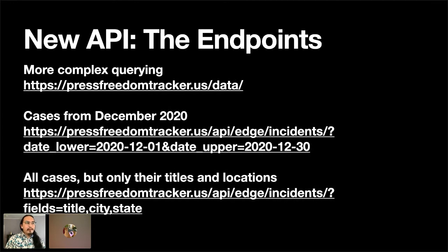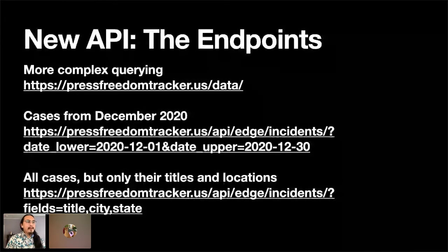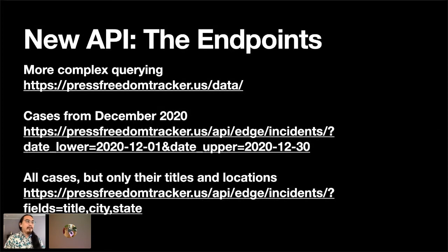Our API also supports more complex queries. We have some documentation for that at pressfreedomtracker.us. Here are a couple of examples: you can make a query with a date range to get incidents within a specific period. You can also change which fields you're requesting — by default it includes all information, which can be quite a lot since it includes write-ups in complete rich text formatting. If you don't need all that, you can specify just the title, city, and state of the incidents. Feel free to ask me later in Slack or during Q&A for more query examples.